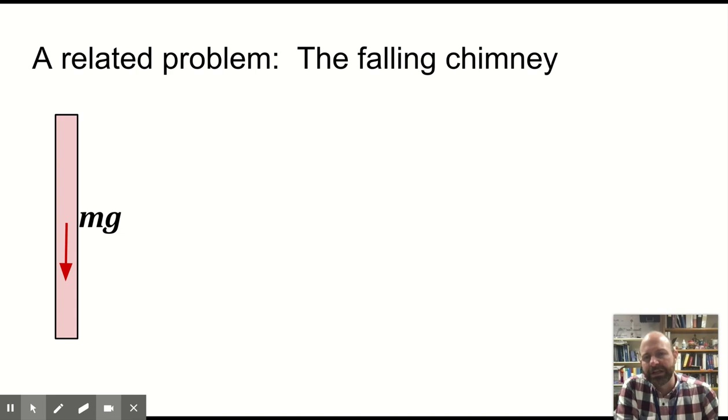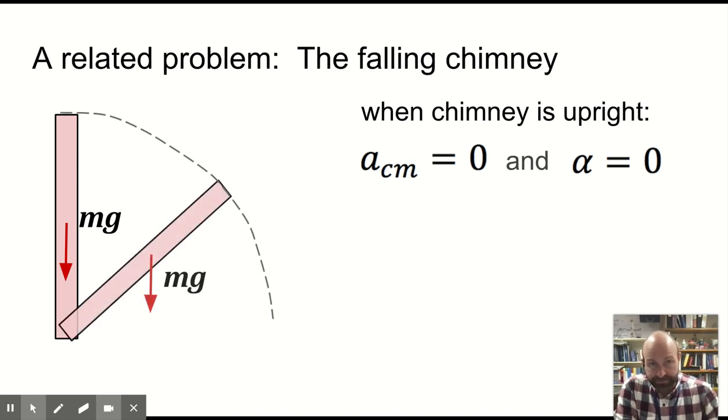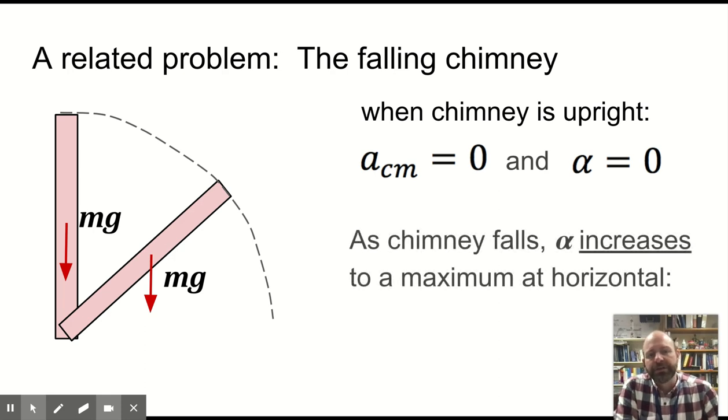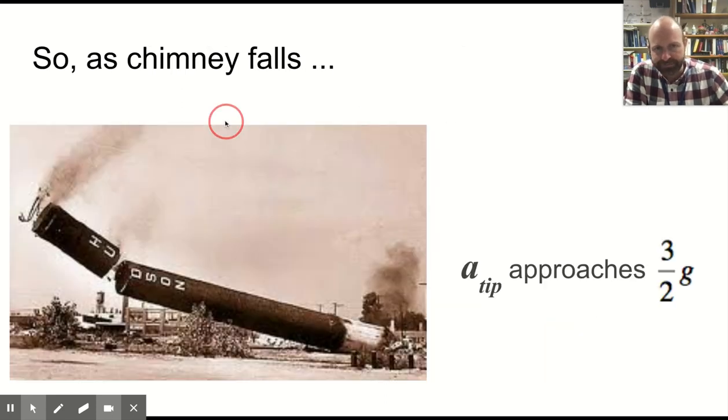All right, so a related problem, the falling chimney. So instead of having something start horizontal and go to the vertical, what if it starts vertical and falls over? When the chimney is upright, the acceleration of the center of mass is zero and the alpha, the angular acceleration is zero. If you let it fall, give a little push, alpha increases to a maximum when it's horizontal. And we already calculated that value. But that doesn't happen until it's on the ground. So it just keeps getting faster and faster and faster.